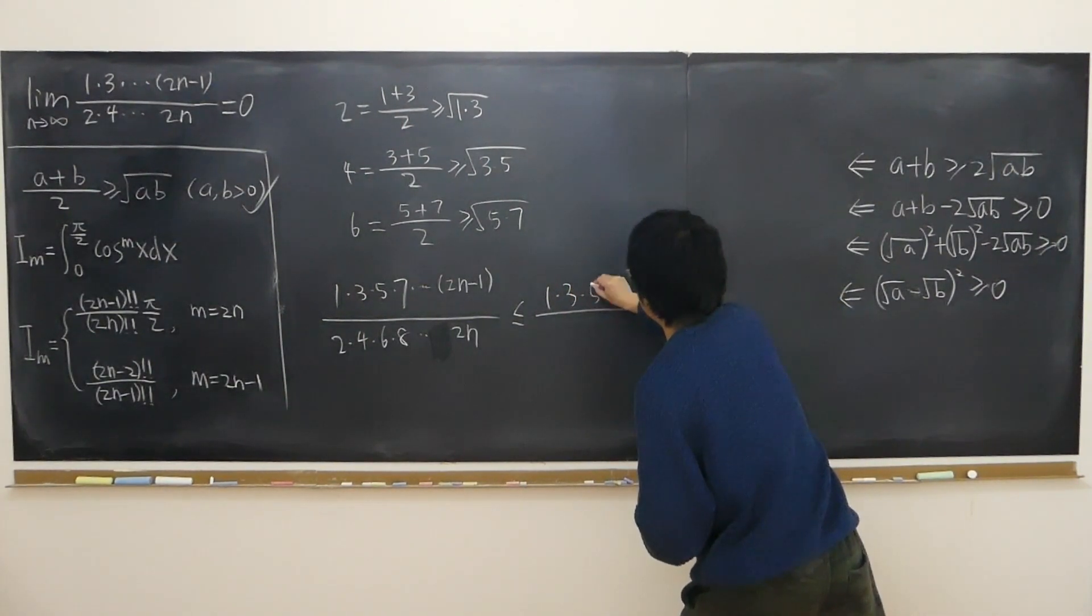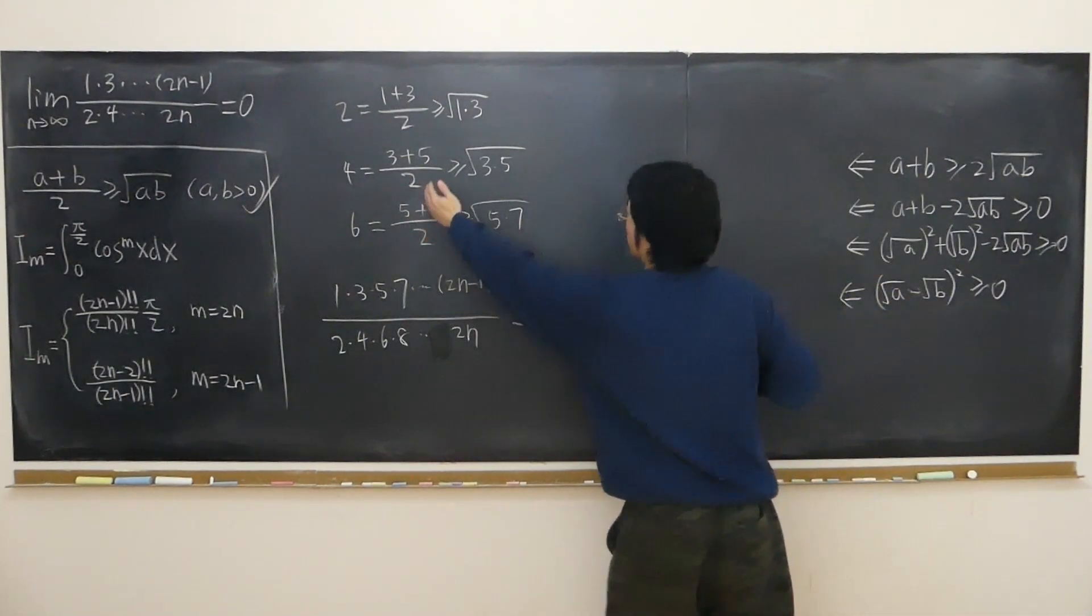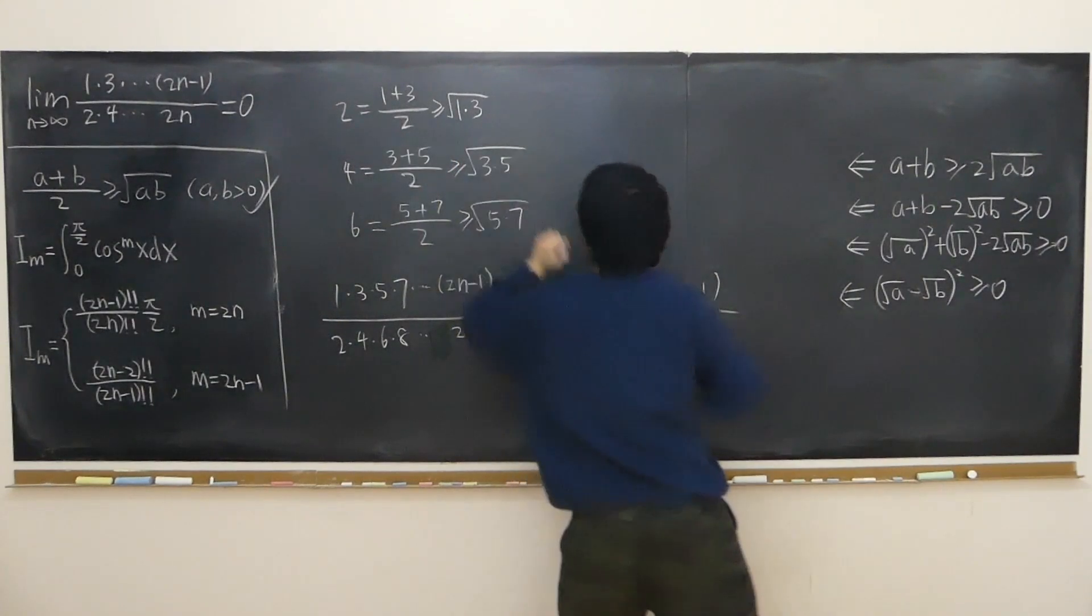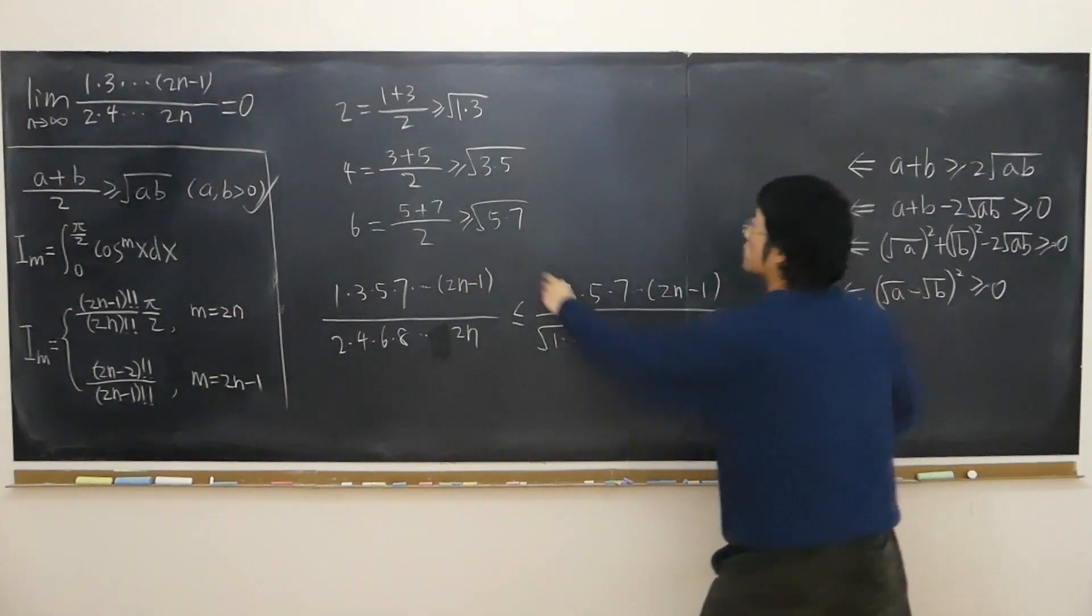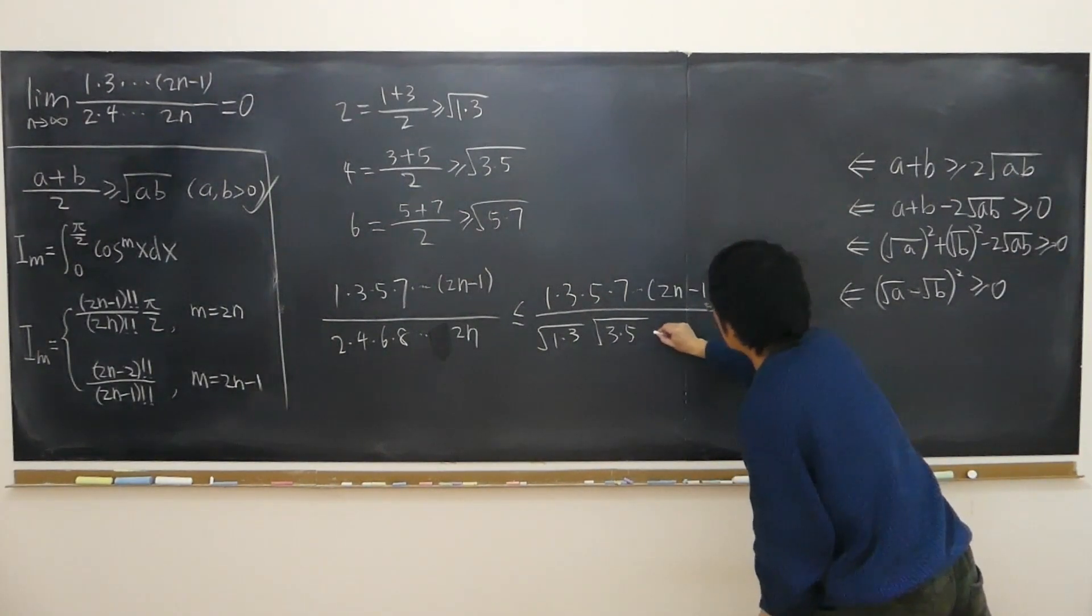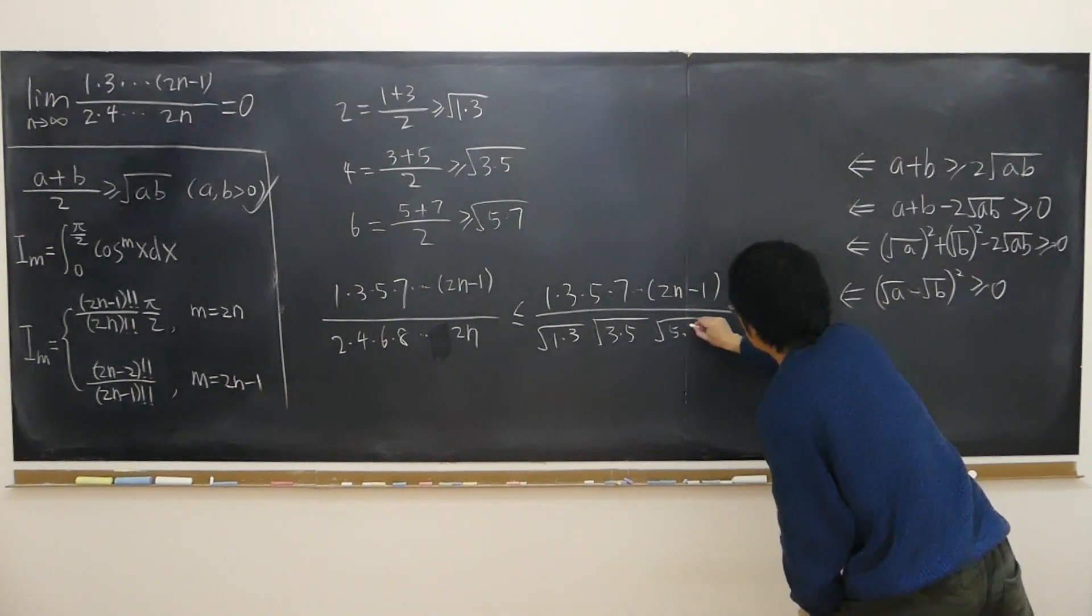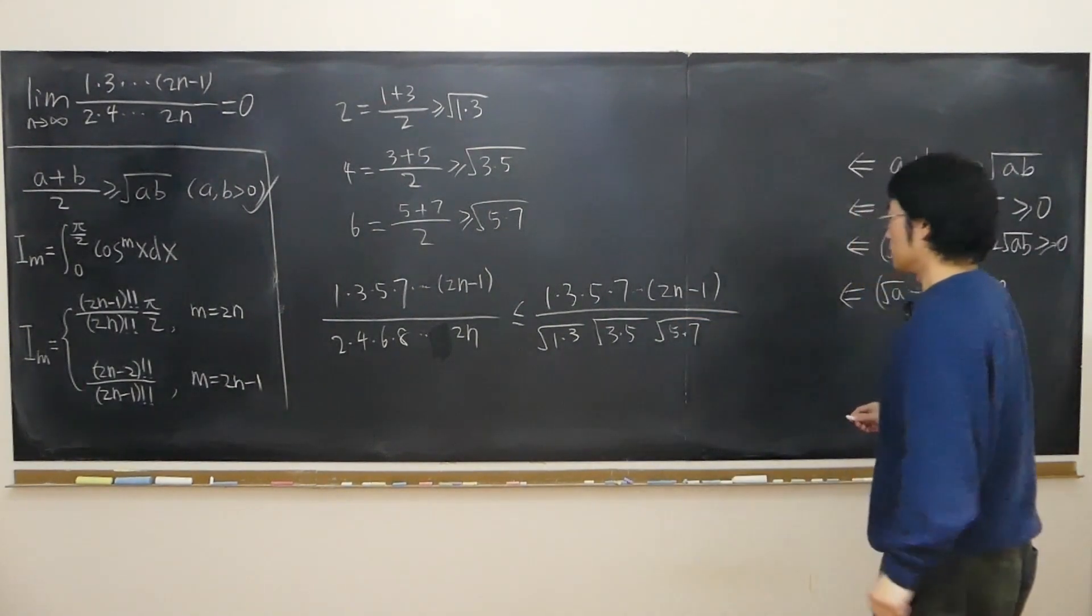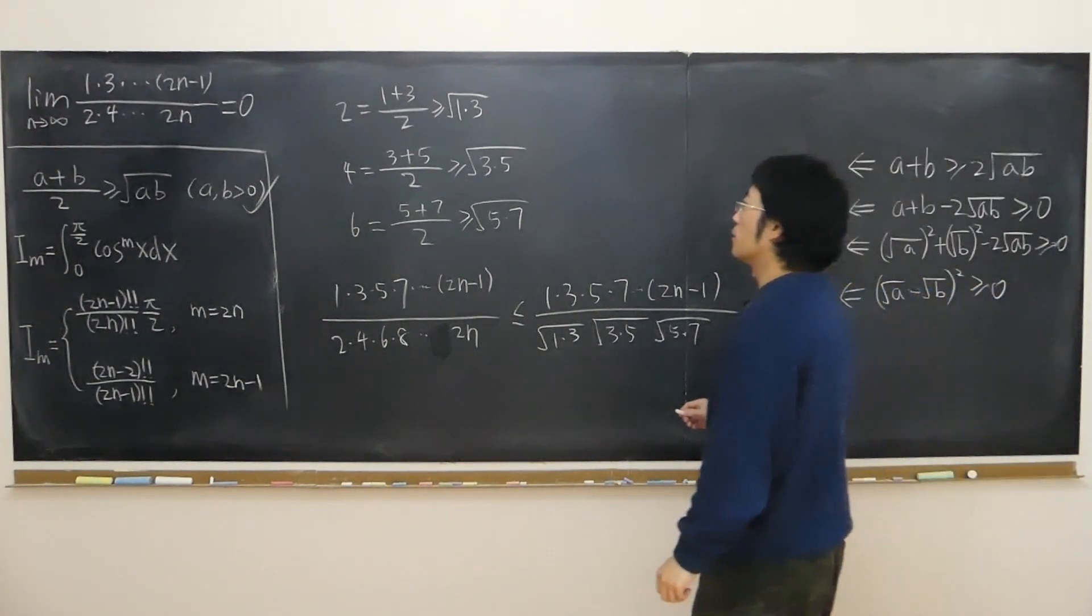I'll still keep the top 1 times 3 times 5 times 7 all the way up to 2n minus 1. I replace 2 with square root of 1 times 3, replace 4 with that, so times square root of 3 times 5.